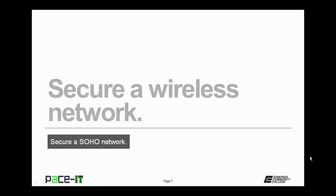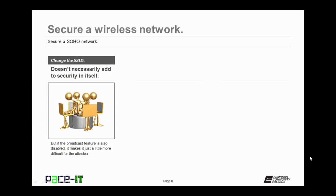Now let's move on to things that you can do to help secure a wireless network. The first item under discussion is changing the SSID — the Service Set Identifier — that's the name of the network. It doesn't necessarily add to security in itself, but many default SSIDs are actually the model number of your WAP, your wireless access point. Most WAPs have some weaknesses that can be exploited, so if an attacker knows what model you have, they might be able to exploit it easier. So change the SSID to something of your choosing.